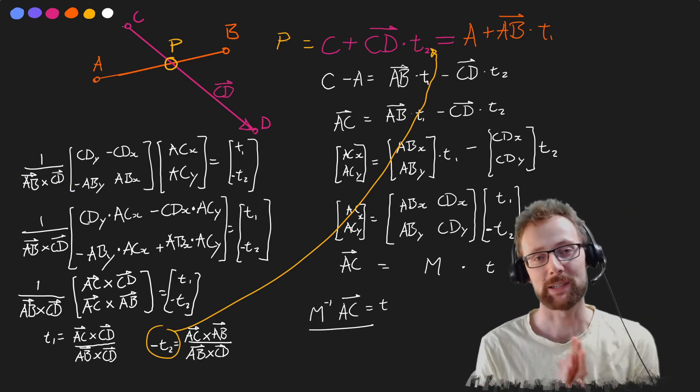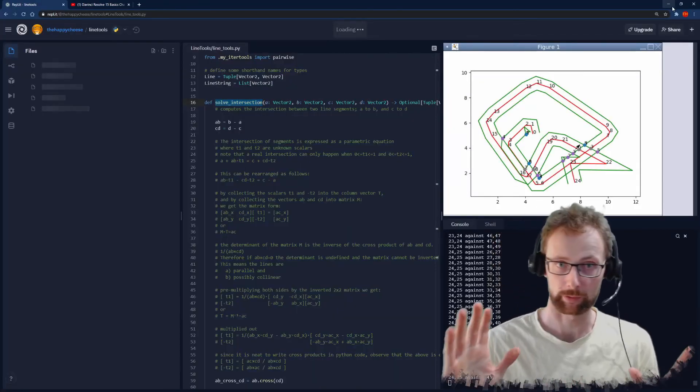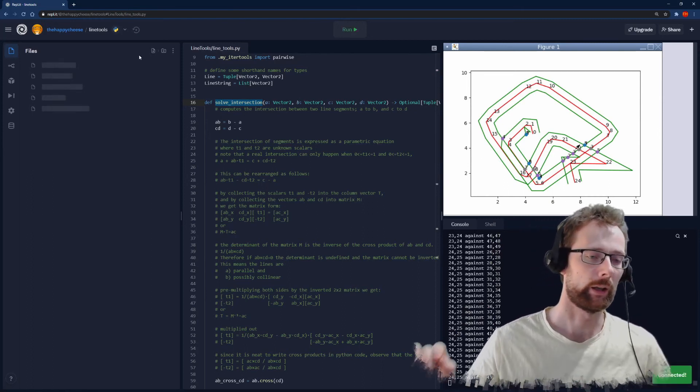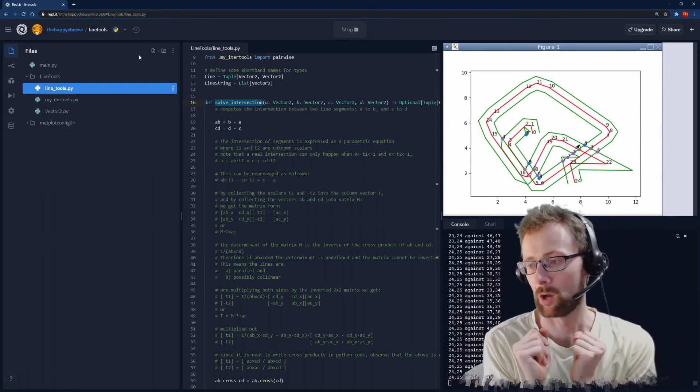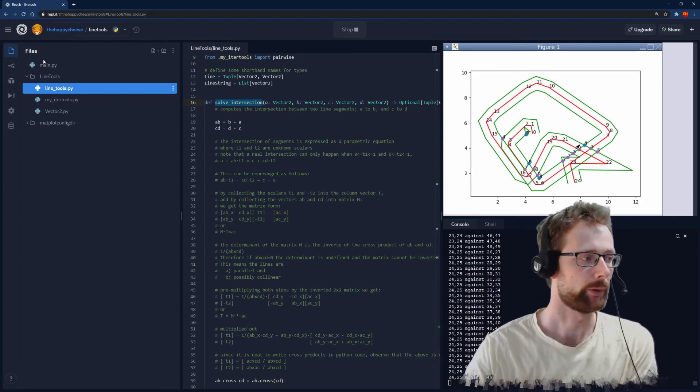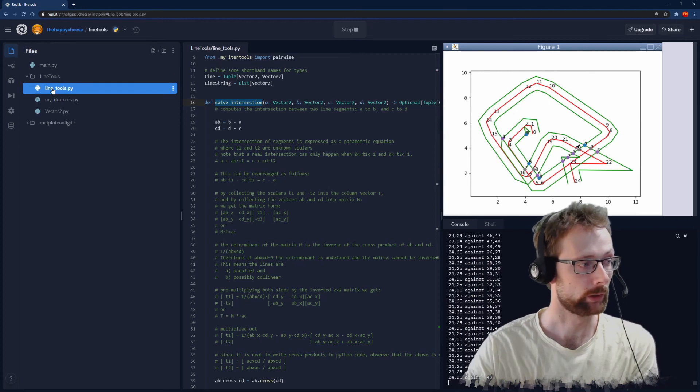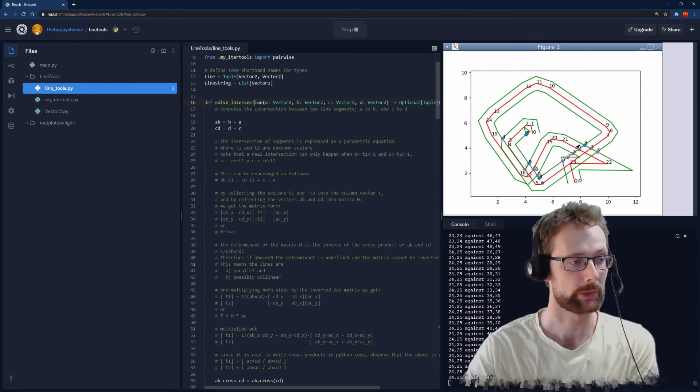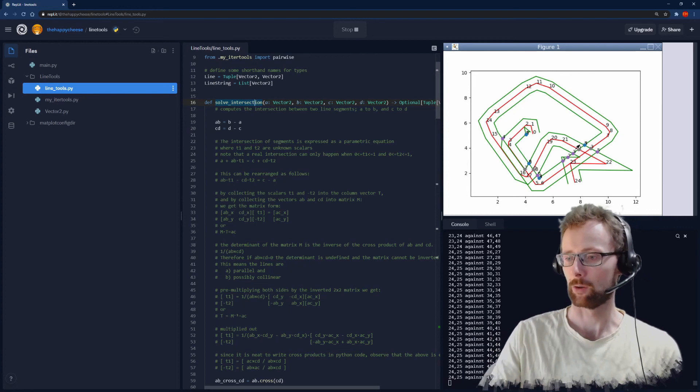So if you'd like to see an actual implementation of this I have a REPL that I have been working on and it's basically a library for offsetting lines and other tools. But if you go into the line tools package and you look at line tools.py up the top is solve intersection.